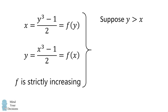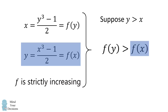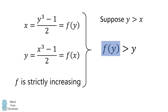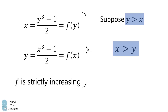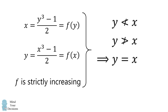We will now suppose the opposite, that y is greater than x. The proof works in a very similar fashion. Since f is strictly increasing, we can apply it to both sides of the inequality. We then have f of x equals y, and f of y equals x. We assumed that y was greater than x, but we showed this implied that x was actually greater than y — and again, we have a contradiction. Thus, y cannot be less than x and y cannot be greater than x, which means y must equal x.